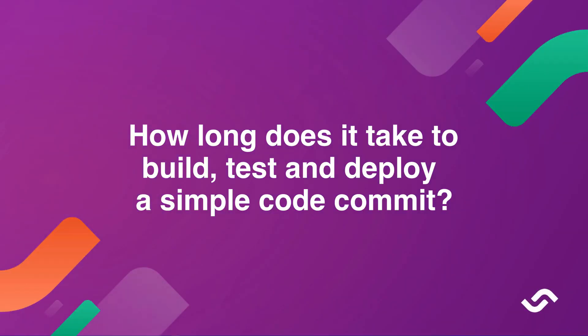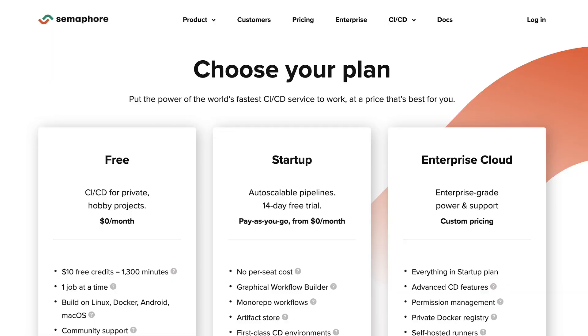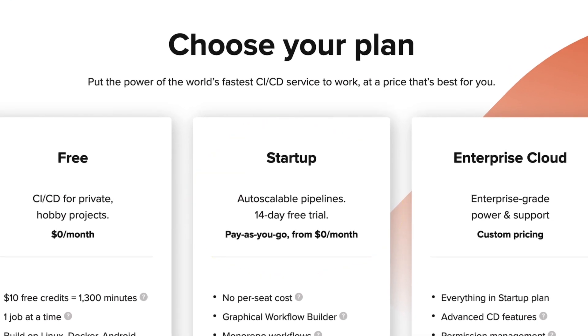Secondly, how long does it take to build, test, and deploy a simple code commit? If it takes a long time, developers opt for less frequent and more risky deployments instead of the rapid changes that businesses need today. Third, do our CI/CD pipelines scale to meet development demands? Traditionally, CI/CD pipelines have limited capacity, meaning only a certain number of pipelines can run at a given time. As a result, resources sit idle most of the time while developers wait in the queue during busy periods. In this regard, auto-scaling and pay-as-you-go models in tools like Semaphore come in handy.